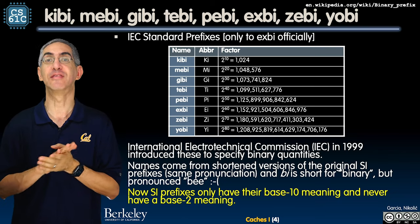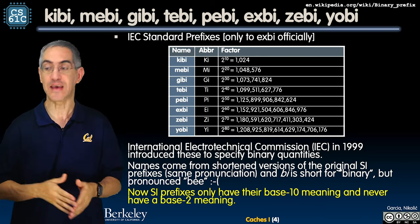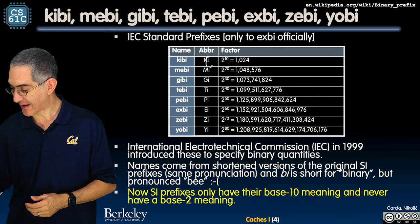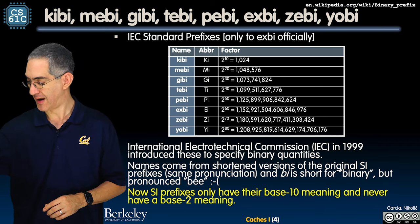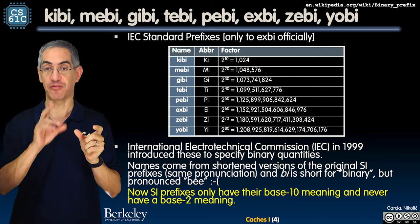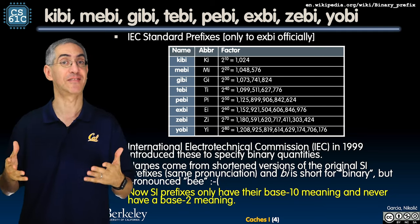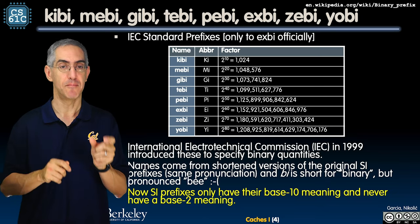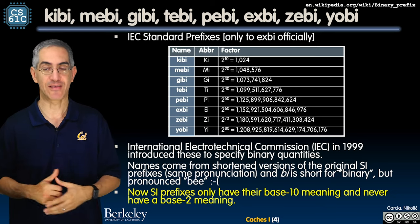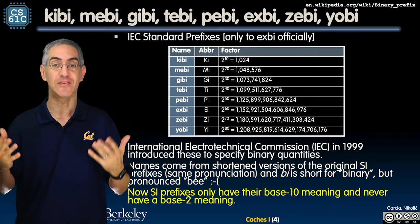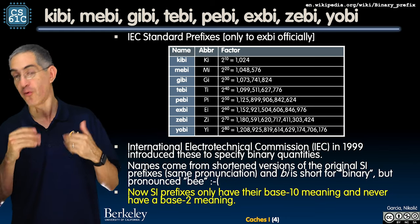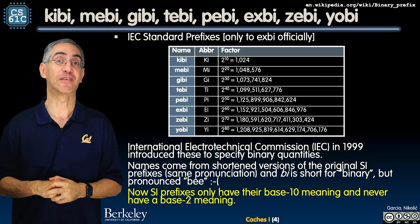Enter the IEC — the International Electrotechnical Commission — which in 1999 introduced binary prefixes. They kept the same column letters: K, M, G, T, P, E, Z, Y, but added an 'i' making them kibi, mebi, gibi, tebi, pebi, exbi, zebi, and yobi. The first two letters match the original prefix, but 'bi' for binary is added to make them distinct.